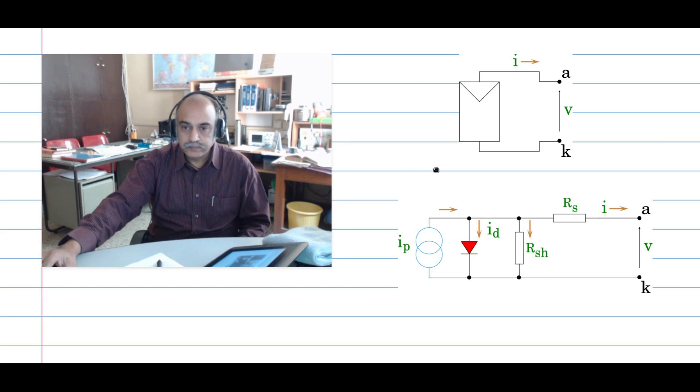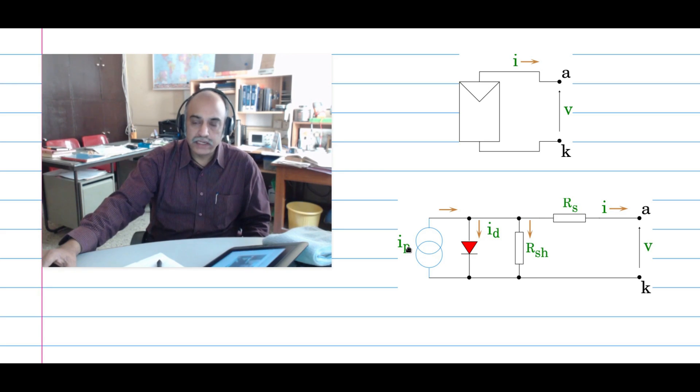The equivalent circuit is like this, where you have this constant current source representing the photo current. The photo current I_P is basically directly proportional to the incident solar power. This is primarily the source; rest all other parameters are sinks, dissipators. We shall now try to study this equivalent circuit model a bit further.